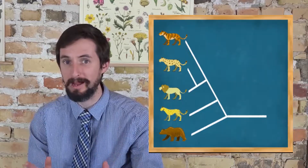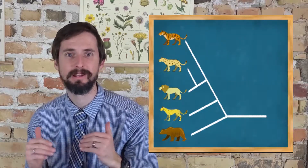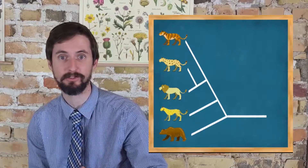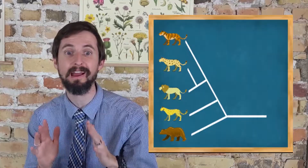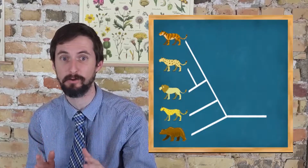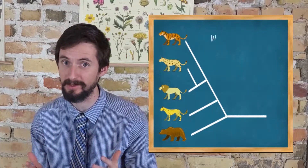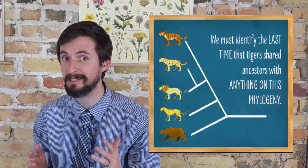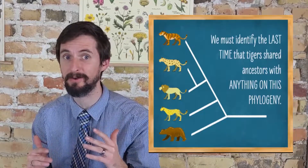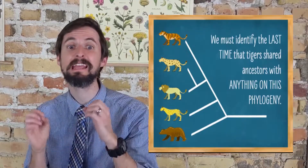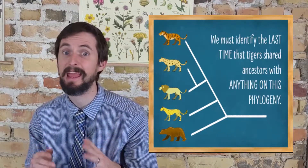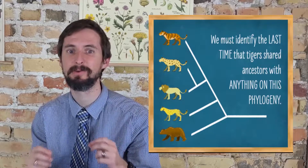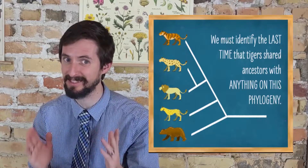The only right way is to identify the last time that tigers share common ancestors with any other living group on this phylogeny, and everything else that shares those ancestors with the tiger are equally related to the tiger, and the closest living relatives to the tiger.